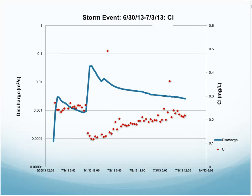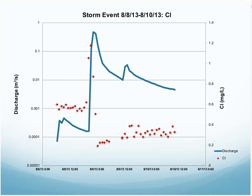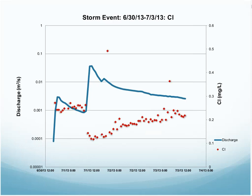Next are the chloride ions, where we see a bit of a different response. Again, the July 1st event and the August 8th event — upon the start of the event, the ions tend to start to decline a little bit. But once discharge becomes really high, the concentration of ions decreases, and as the discharge begins to decrease, or as the event is coming to an end, the concentration of ions continues to rise.